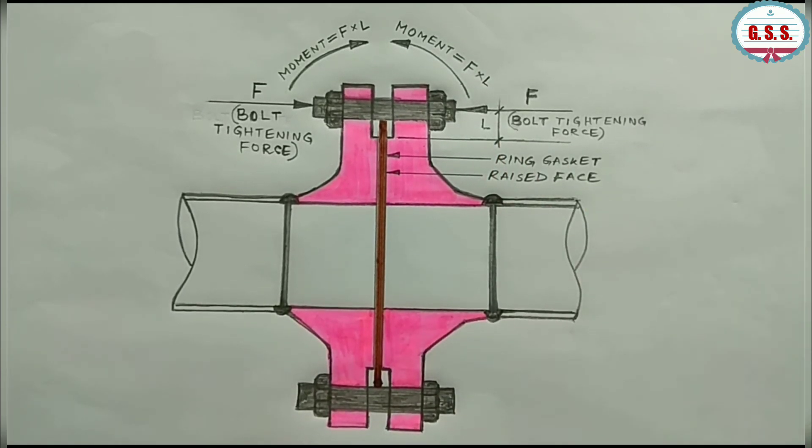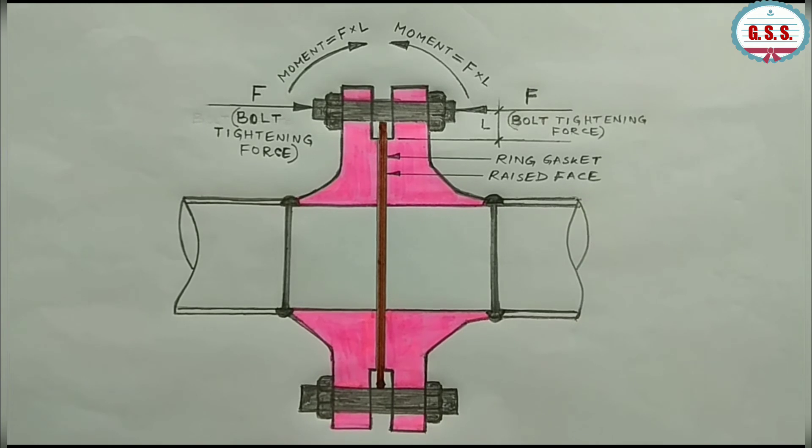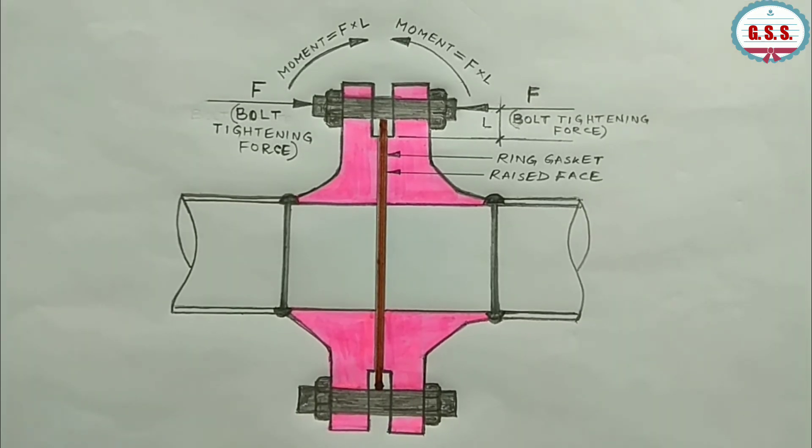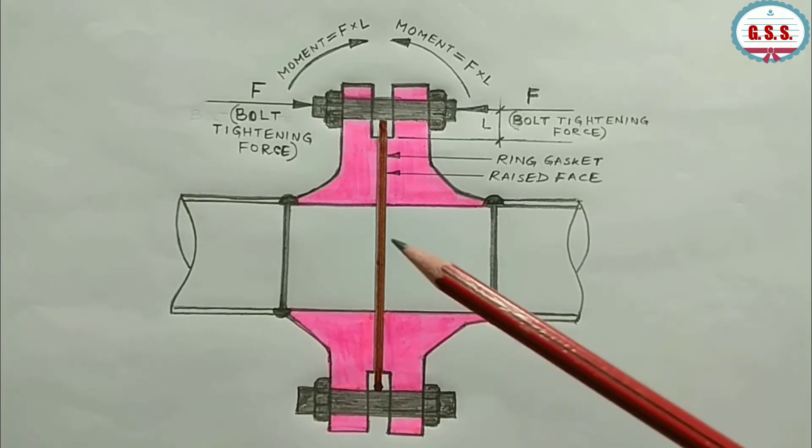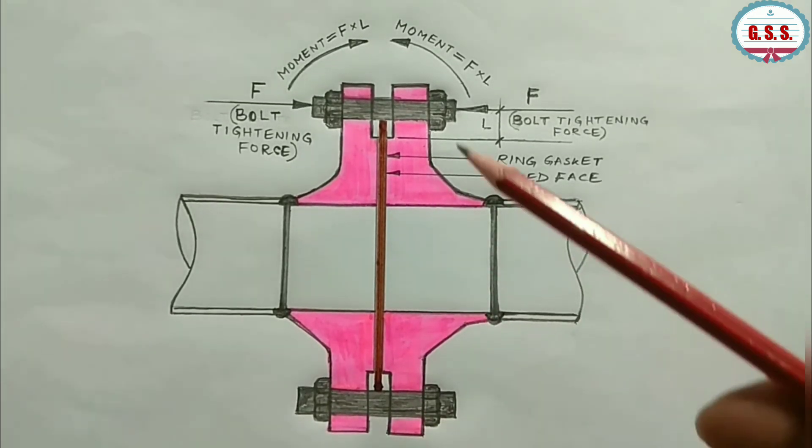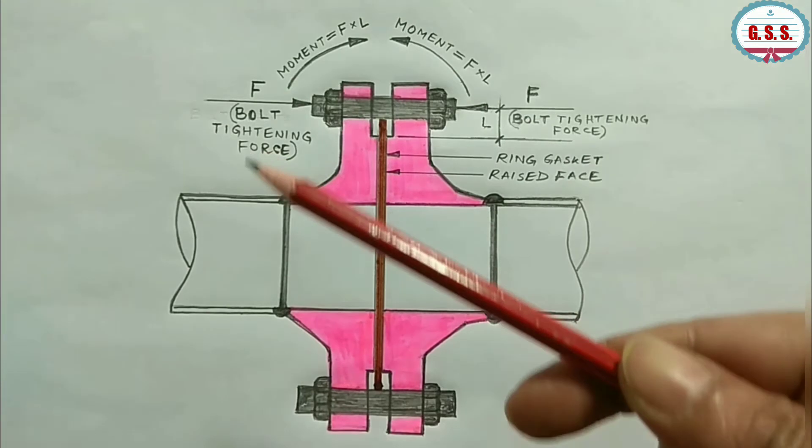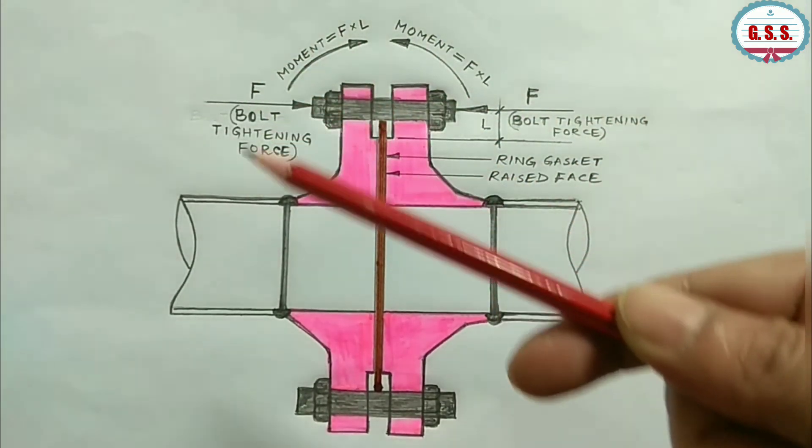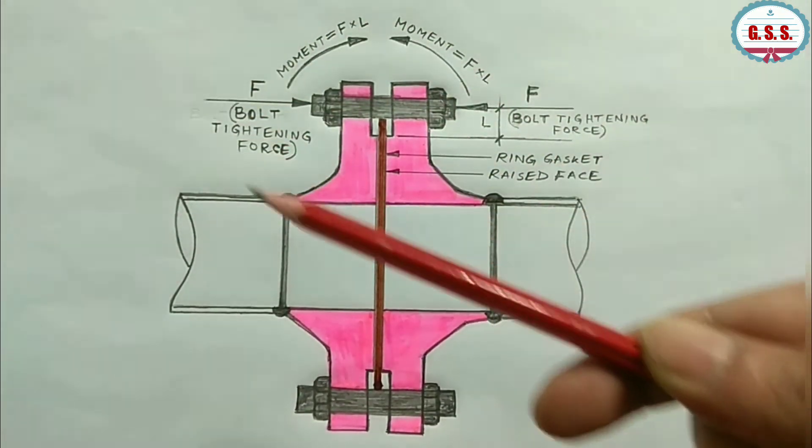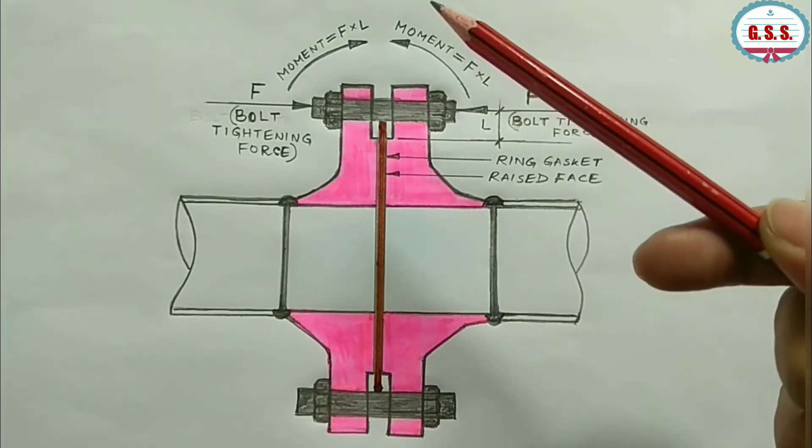Due to this moment, the gasket is more compressed. Also, in case of raised face flange joint, replacement of ring gasket is easier. We need not remove all bolts. We can remove only 50% of bolts from the upper portion of the flange joint and then take out the old gasket.